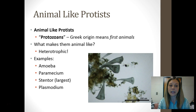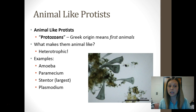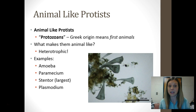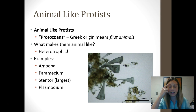Let's start by talking about our animal-like protists, sometimes called protozoans, which has a Greek origin: 'pro' meaning pre or before, and 'zoology' being the study of animals — so this actually means 'first animals.' What makes them animal-like is that they are heterotrophic, meaning they do not make their own food; they have to consume other organisms. They also do not have a cell wall, just like actual animals.